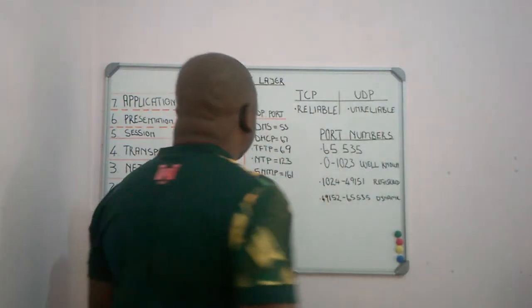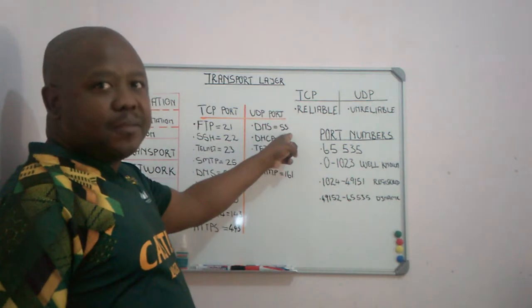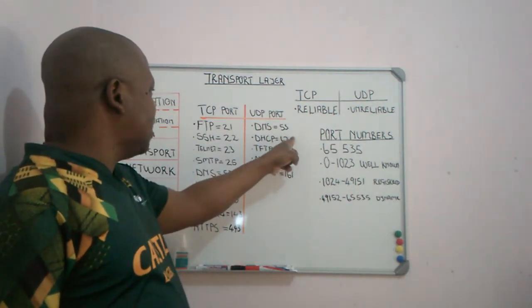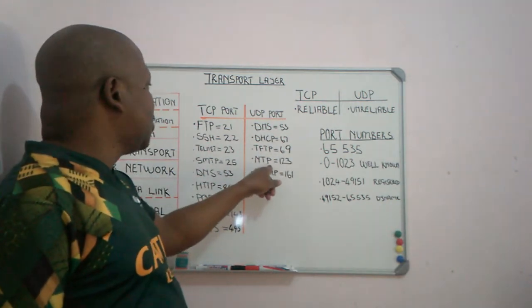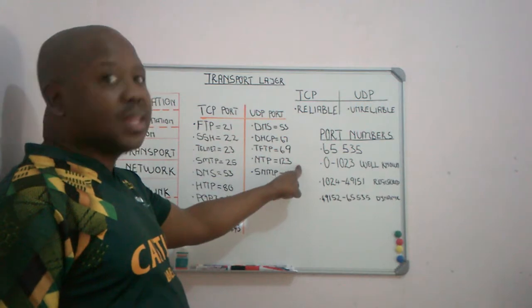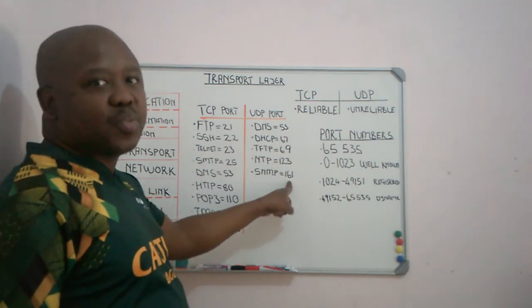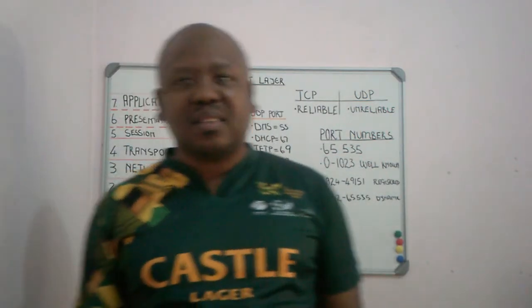On the UDP side, we have DNS using port 53, DHCP using port 67, TFTP using port 69, NTP using port 123, and SNMP using port 161.